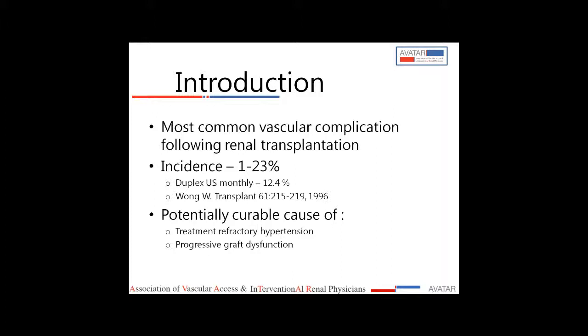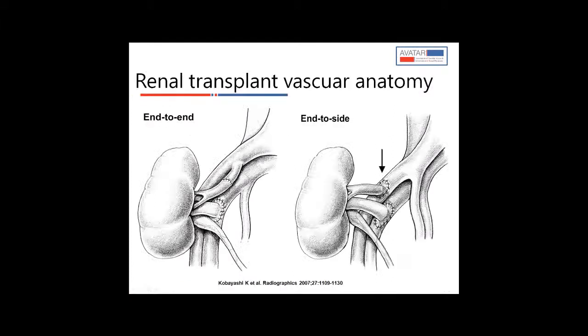It is important to identify TRAS because it is a potentially curable cause of treatment-refractory hypertension and progressive graft dysfunction. Before we go into the details, we should first understand the basic vascular anatomy of renal transplant.